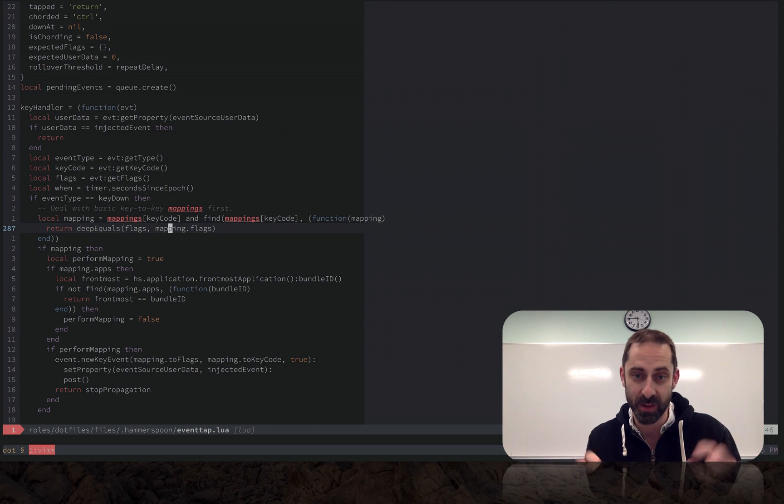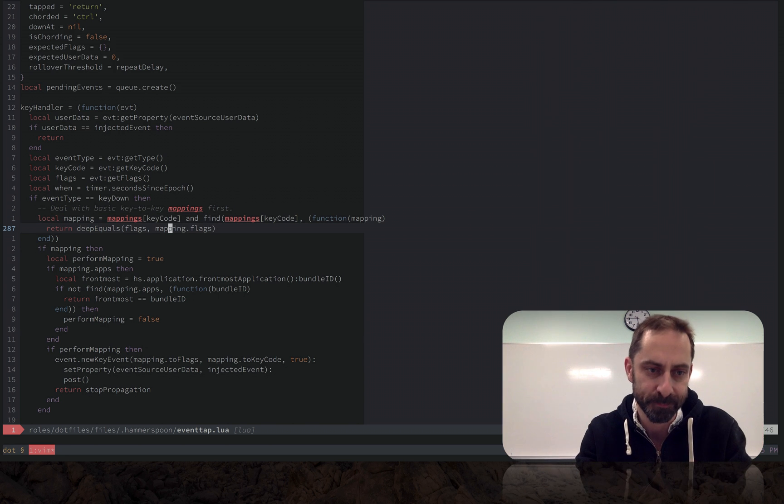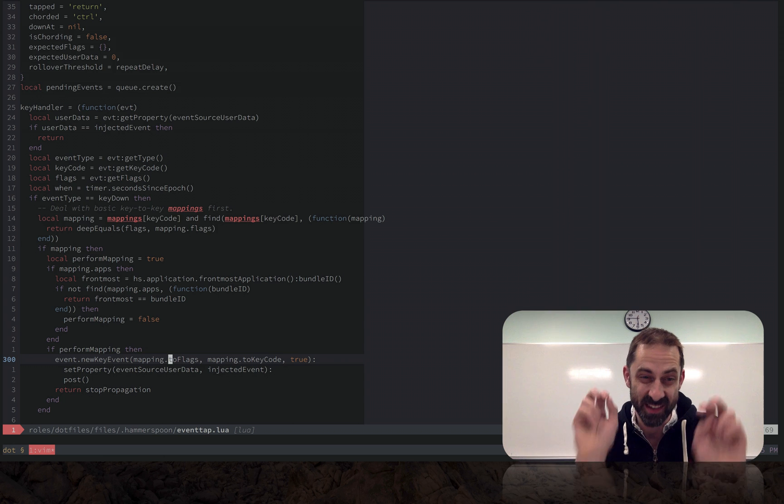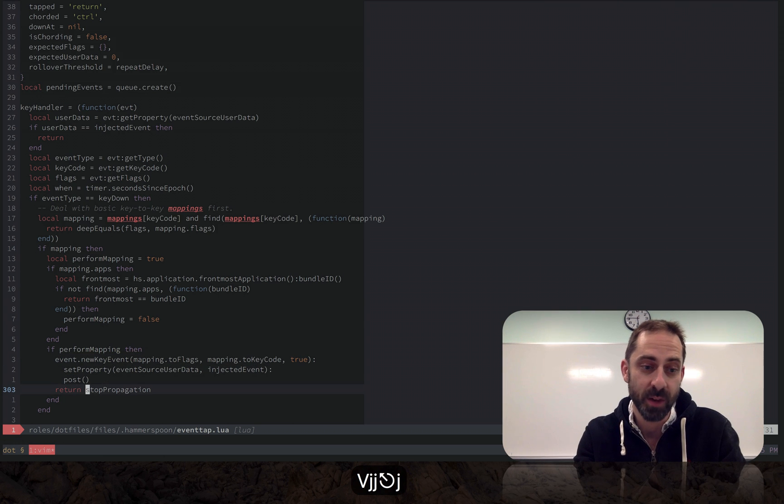We look through all the mappings and make sure that the flags match, the flags being the state of control key. We check if the frontmost application matches one of the permitted bundle IDs, and if those conditions are both true, then we create a brand new key event which is this F6 that I've defined and we stop propagation of the original control I.